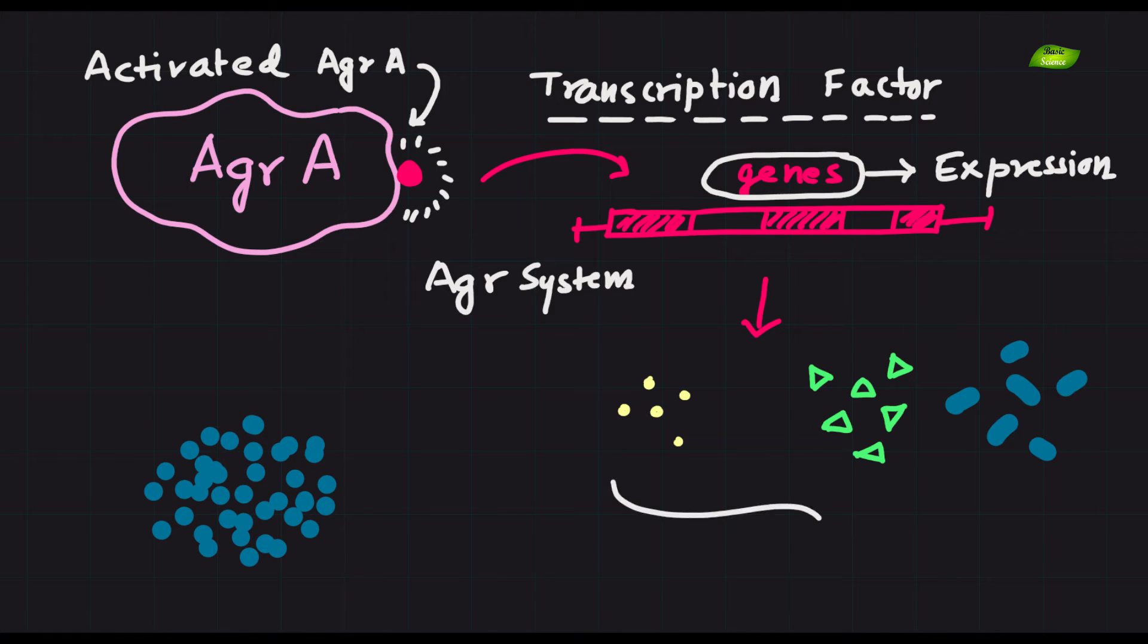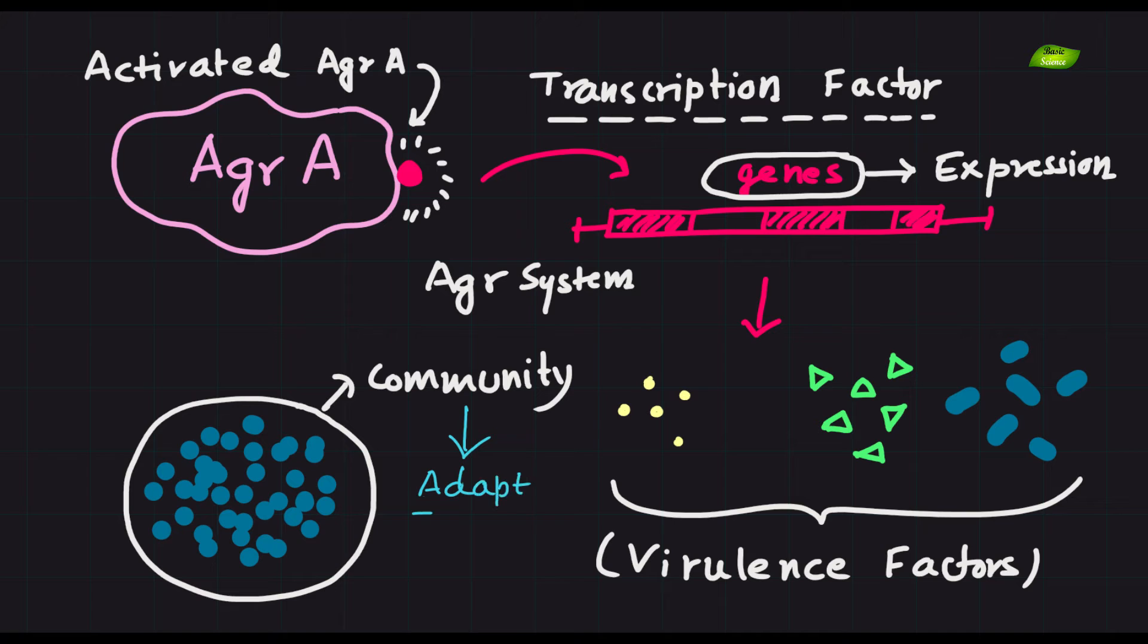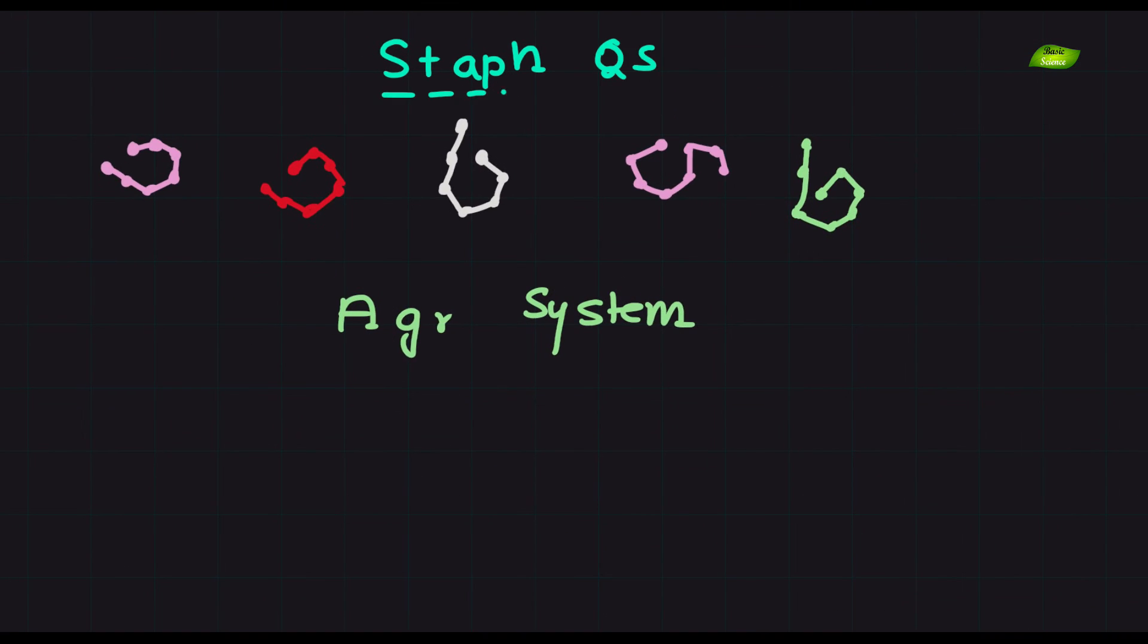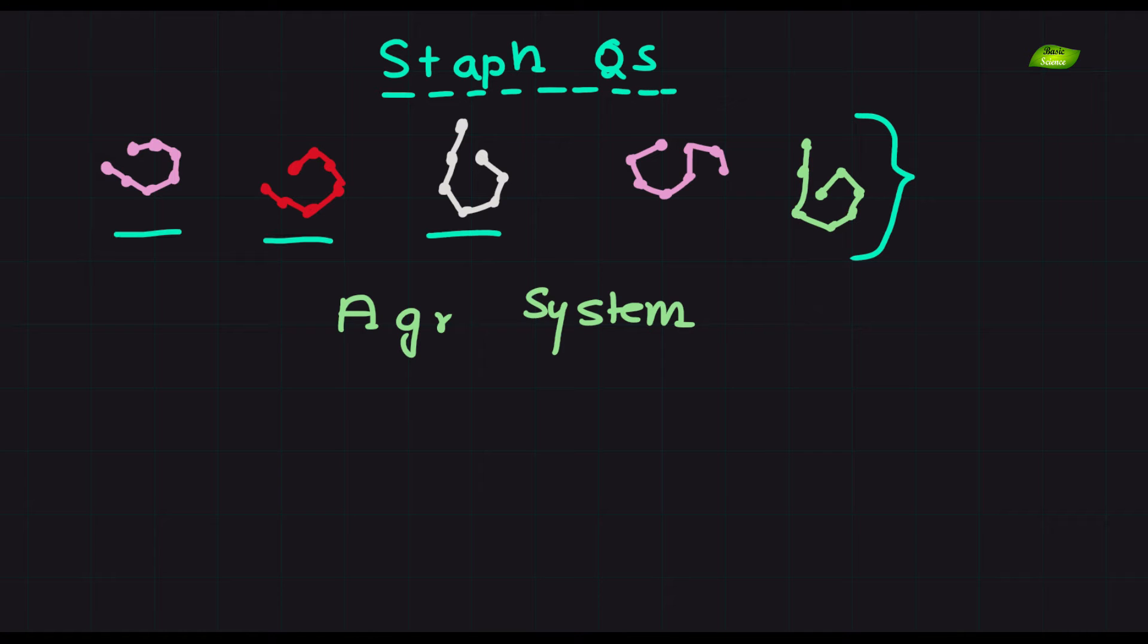These genes, under the control of the AGR system, encode various virulence factors and regulatory components, allowing the bacterial community to adapt its behavior based on the population density.